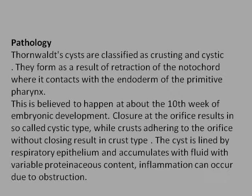Thornwald cysts are classified as crusting and cystic types. They form as a result of retraction of the notochord where it contacts with the endoderm of the primitive pharynx, and this is believed to happen at about the 10th week of embryonic development. Closure at the orifice results in the cystic type, while a crust adhering to the orifice without closing results in the crust type. The cyst is lined by respiratory epithelium and accumulates fluid with variable proteinaceous content. Inflammation can occur due to obstruction.